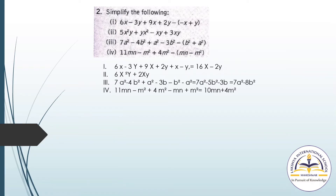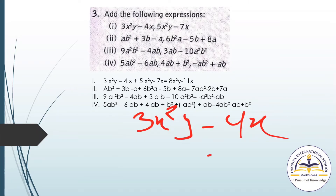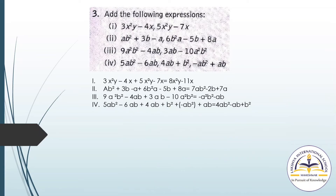In the same manner you have to solve these questions. Add the following expressions. Here: 3x²y minus 4x. You have to add them, so write 3x²y minus 4x, then 7x here, then 5x²y, then minus 11x, and plus 3x²y. So this will be our answer.